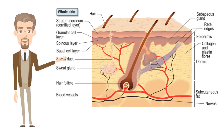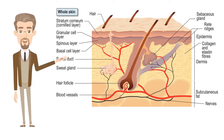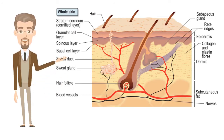The layers are: stratum corneum (horny layer); stratum lucidum, only found in thick skin — that is, the palms of the hands, the soles of the feet, and the digits; stratum granulosum (granular layer); stratum spinosum (prickle cell layer); and stratum basale (germinative layer).